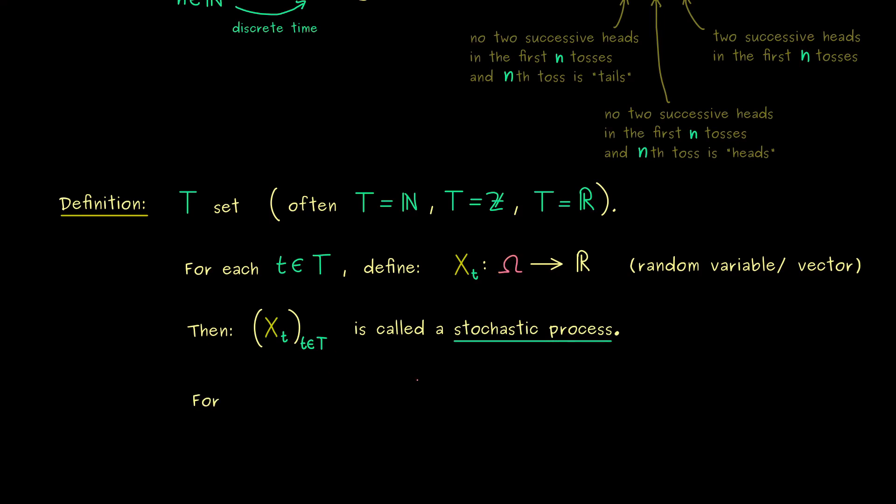And now for a given stochastic process we can also fix a lowercase ω from our sample space. And then we can simply check what happens with this ω over time. In other words we have a map from the time set T into R, and then we can check at each time point t what happens with our ω. This means we simply put it into X_t.